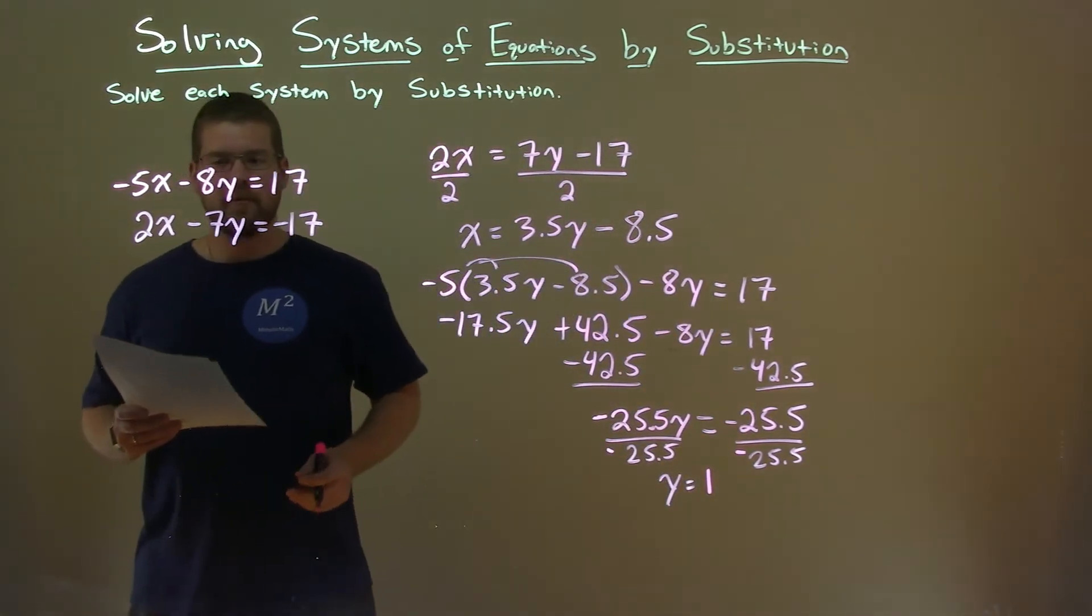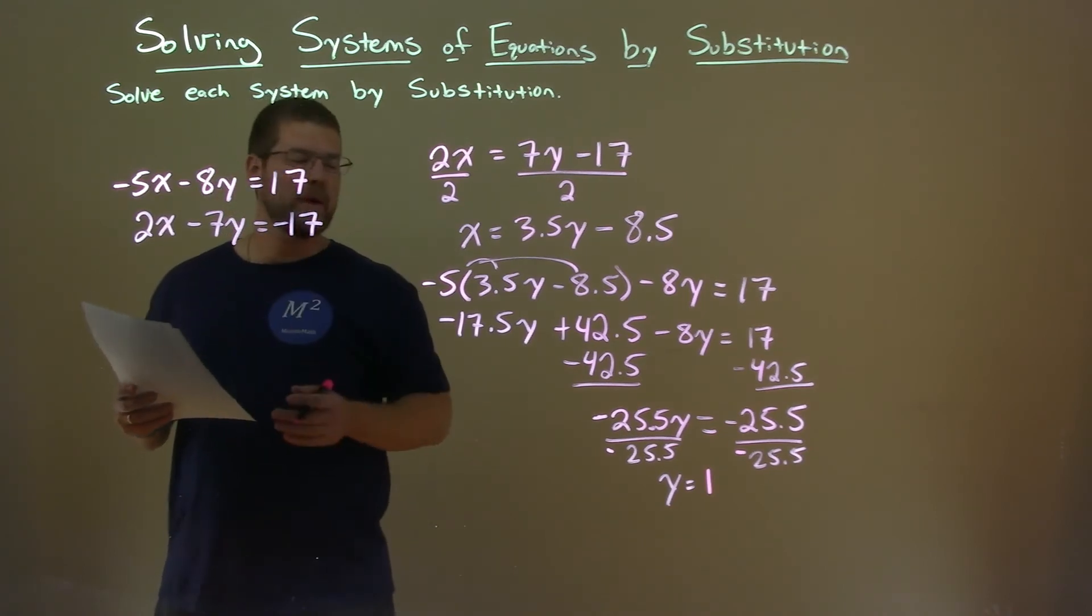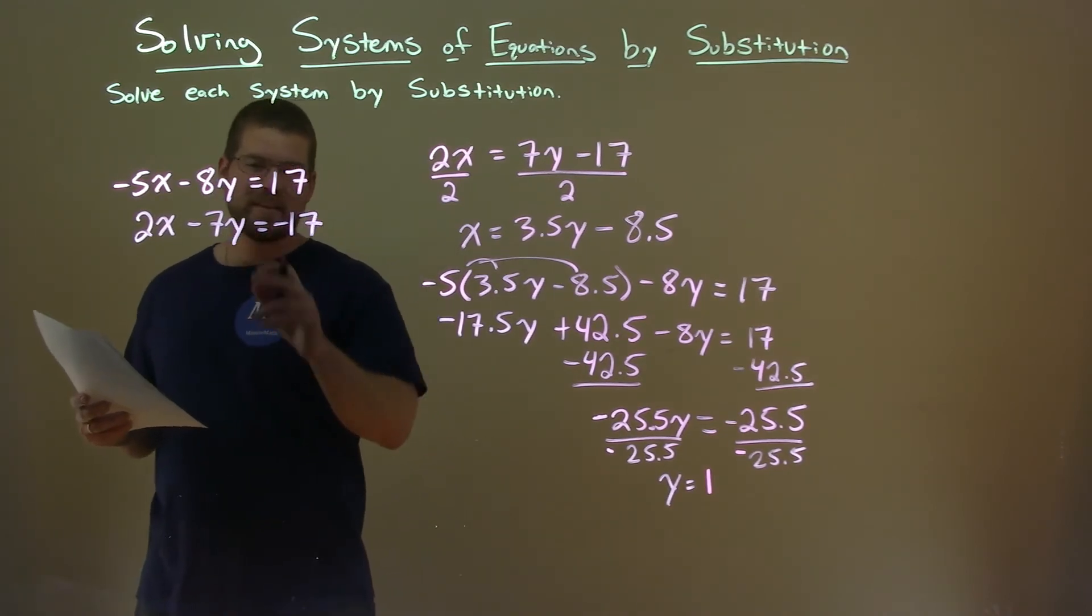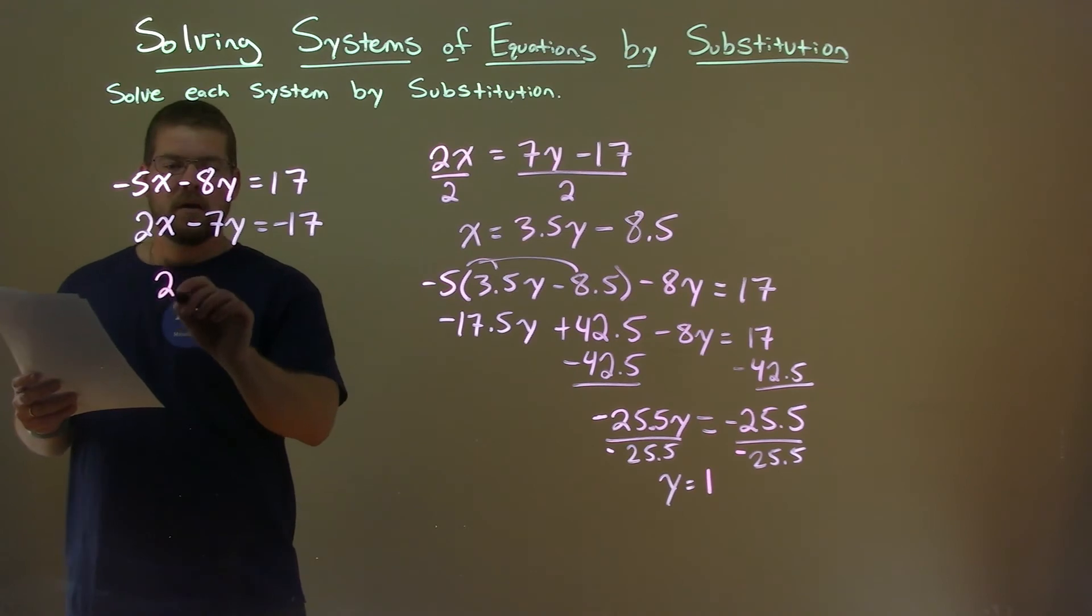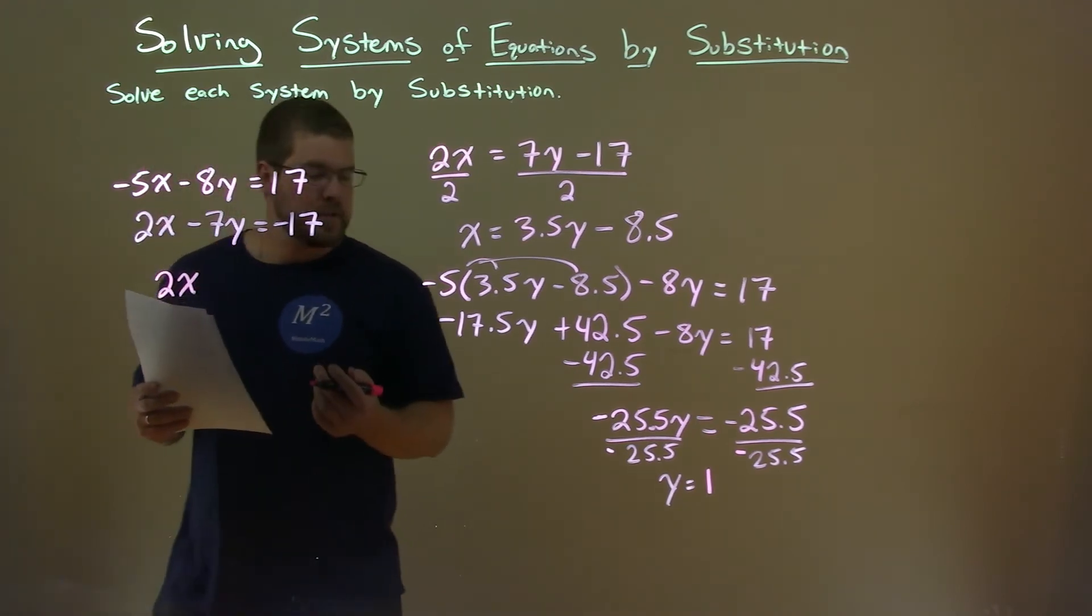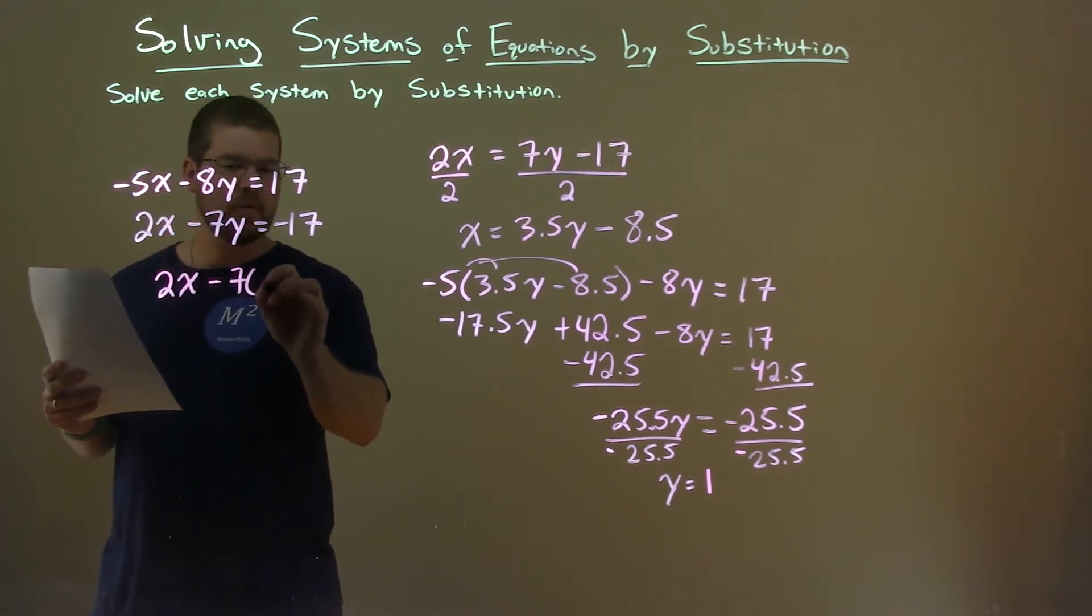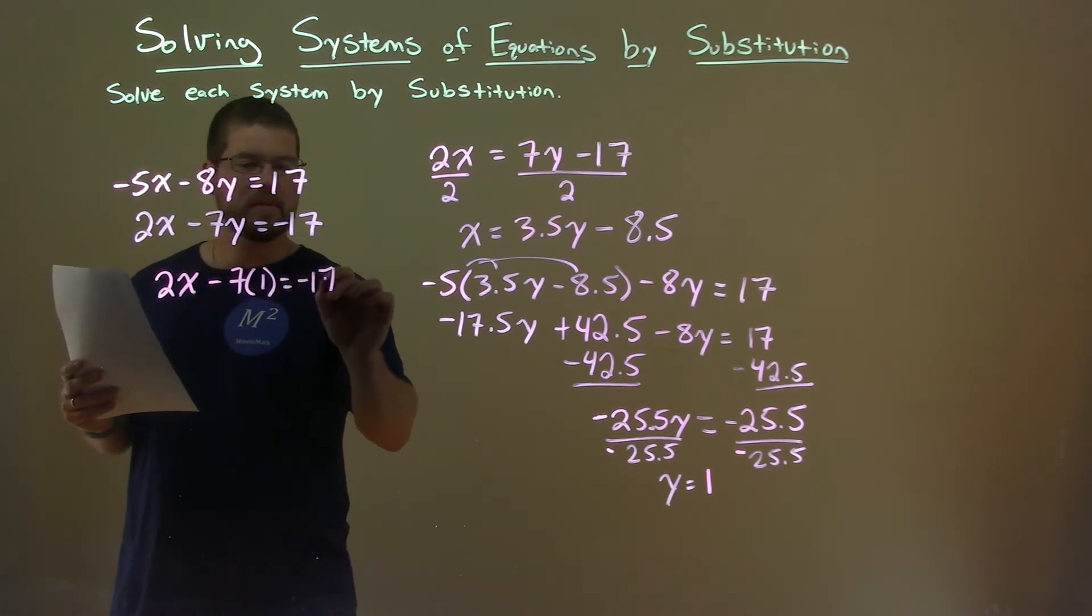All right. So I have y by itself here. I need to plug it into one of my other equations to solve for x. I think the second equation is easier. Maybe it's just because I like working with the number 2. 2x - 7 times 1 = -17.